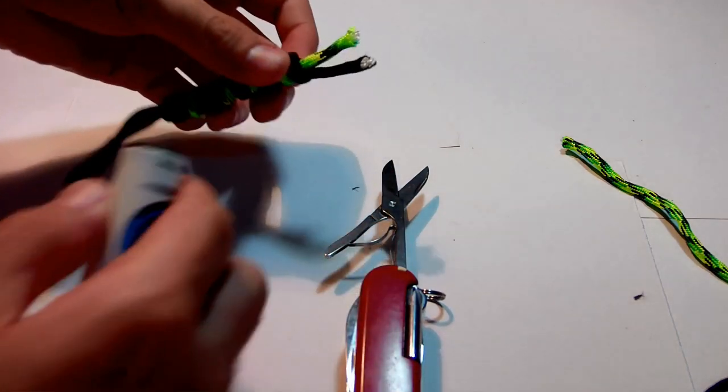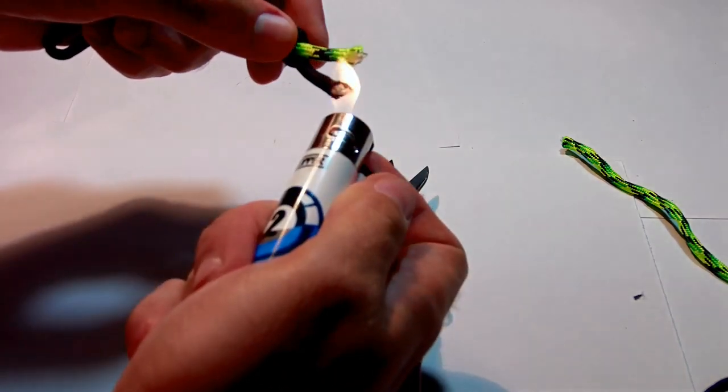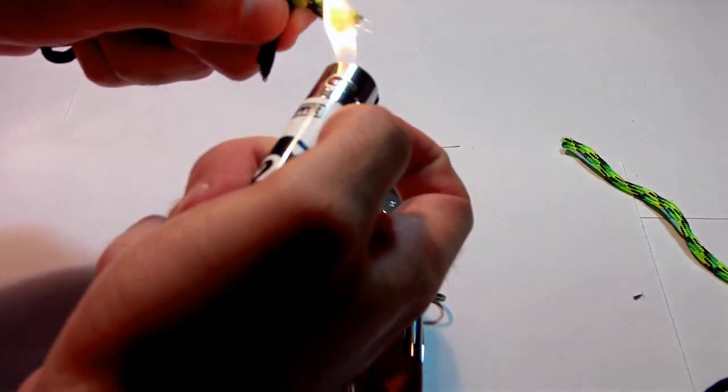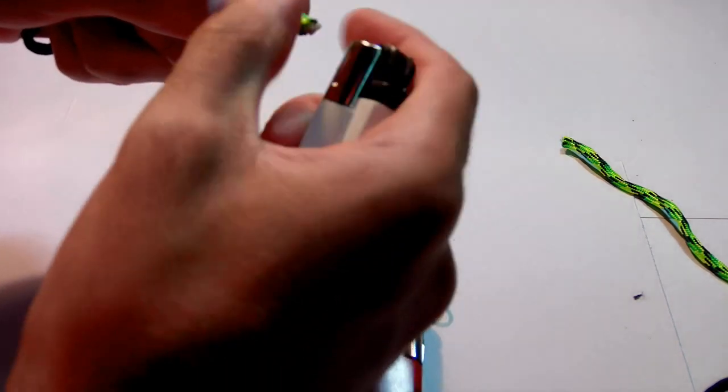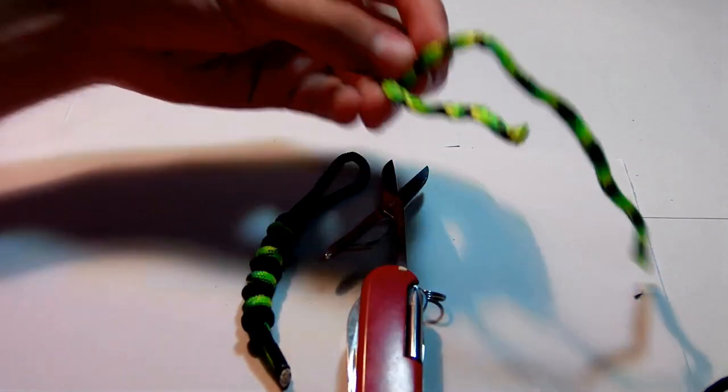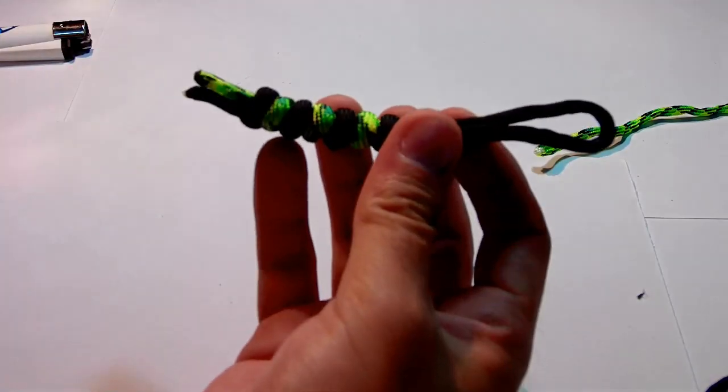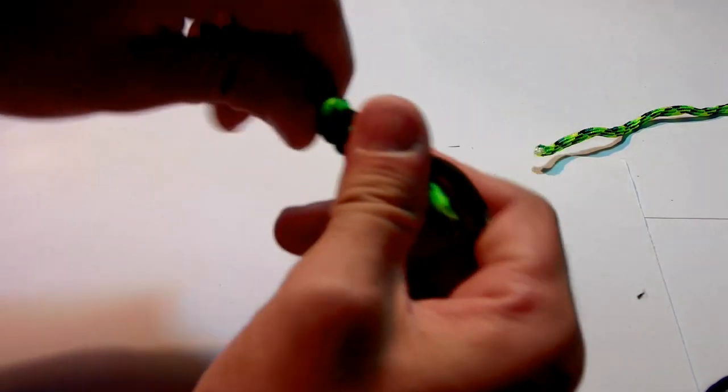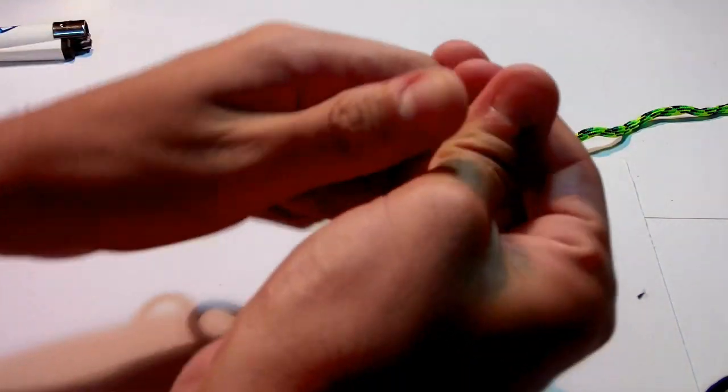Once you're happy with the length just cut it. Save the rest of the paracord for other days. They might be small but you might find a project that they will be useful. Even for this small piece you can do a fishing lure with it. Now that's it, our snake knot lanyard. Just twist it a little bit to align those knots.